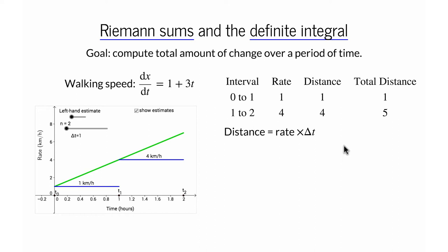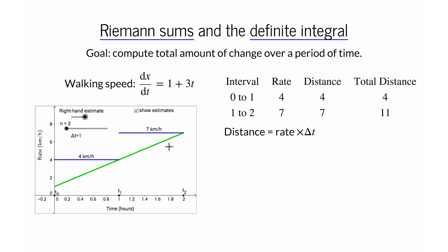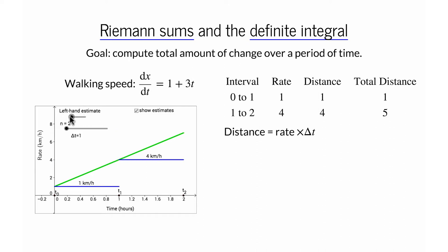Obviously, this is a poor approximation — you actually walked faster than we assumed, so you should get credit for more distance. You argue it is unfair to use the slow initial rate, and that we should instead use the rate at the end of each interval. The first method was called a left-handed estimate, as we use the left point in each interval. Let's switch to a right-handed estimate, using the right point in each interval. With the right-handed estimate, we assume you walked at four kilometers per hour during the first interval and seven kilometers per hour during the second, for a total of 11 kilometers. There was quite a difference: five kilometers for the left-handed estimate and 11 kilometers for the right-handed estimate.